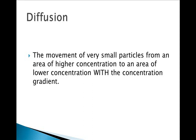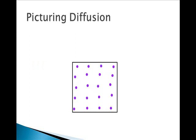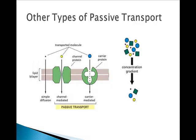Looking at diffusion: we start with a high concentration in one area, and it spreads out until evenly distributed. There are other types of passive transport as well. Channel-mediated transport uses a membrane-bound protein to allow slightly larger molecules across the membrane. Carrier-mediated transport uses specific receptor proteins to allow molecules to pass through the membrane. Both of these go with the concentration gradient — from high to low — and are passive because they do not require energy.